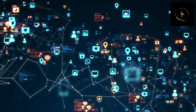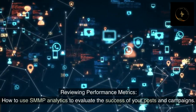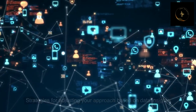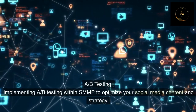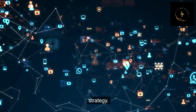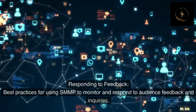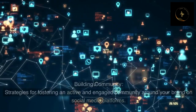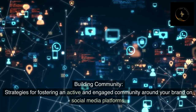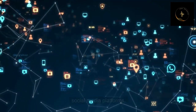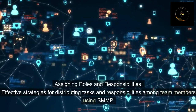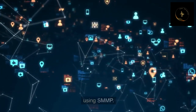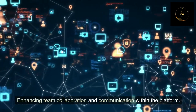Leveraging Analytics for Improvement — reviewing performance metrics: how to use SMMP analytics to evaluate the success of your posts and campaigns, and strategies for adjusting your approach based on data insights. A/B testing: implementing A/B testing within SMMP to optimize your social media content and strategy. Engaging with Your Audience — responding to feedback: best practices for using SMMP to monitor and respond to audience feedback and inquiries. Building community: strategies for fostering an active and engaged community around your brand. Collaborative Team Environment — assigning roles and responsibilities: effective strategies for distributing tasks among team members using SMMP, and enhancing team collaboration and communication within the platform.